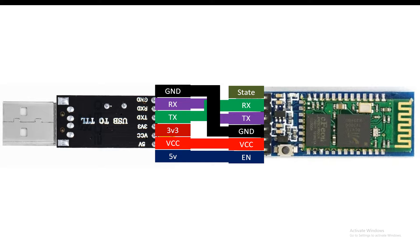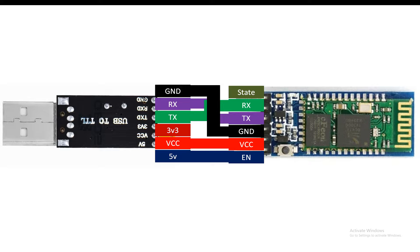As soon as you connect the 5V pin to the enable pin, the module enters AT command mode — the enable or key pin is now high and you can send AT commands to change settings. It will not work in normal data mode while in this state. To reset and return to normal mode, remove the enable wire, then power cycle the module. Once you reconnect it, whatever settings you changed are now saved.